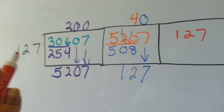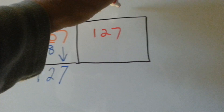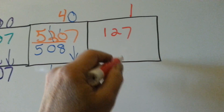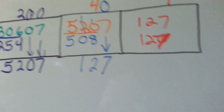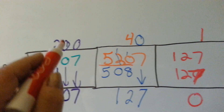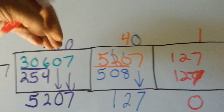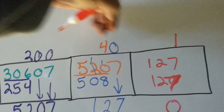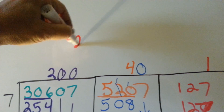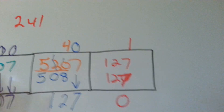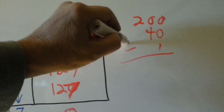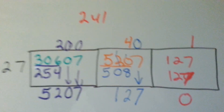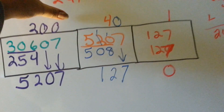How many times does 127 go into 127? One time. 127 times 1 is 127, with 0 left over. And our answer is 241. You can just look at it and see it — you can take the numbers in order and write them like that, or you could pick the numbers across if the zeros weren't there, and just say 241.